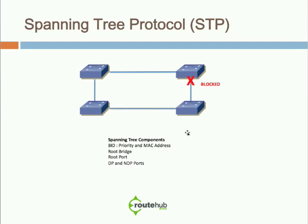Some of the spanning tree components: all switches upon startup have what we call a Bridge Identifier or BID, which consists of a priority. The default priority is 32,768, and they all have a MAC address. The lower priority or lowest MAC address is chosen for the following operations.